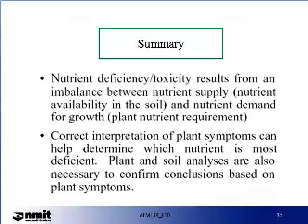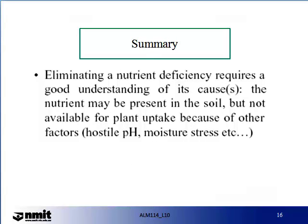In summary, nutrient deficiency and toxicity result from an imbalance between nutrient supply — that is, nutrients available in the soil — and nutrient demand for growth. Correct interpretation of plant symptoms can help determine which nutrient is most deficient. Plant and soil analysis are also necessary to confirm conclusions based on plant symptoms. Eliminating a nutrient deficiency requires a good understanding of its cause. The nutrient may be present in the soil but not available for plant uptake because of other factors, including pH, soil moisture, etc.